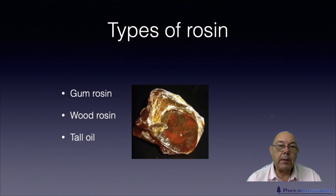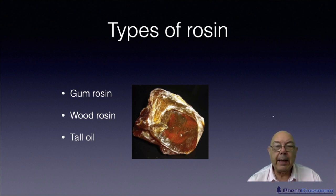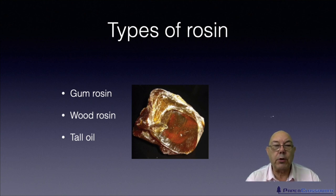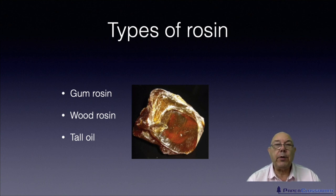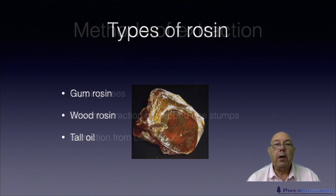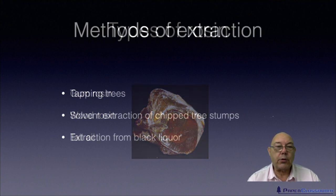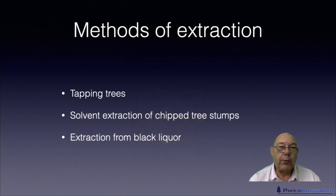This is what rosin looks like. It's a very hard, amber coloured, semi-translucent material. There are three types of rosin: gum rosin, wood rosin, and tall oil. It all depends on where you get it from and how you extract it, and there are three typical methods of extraction.